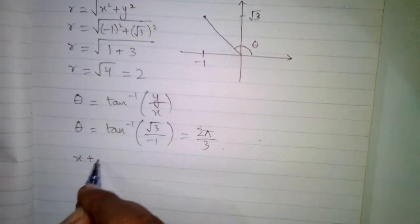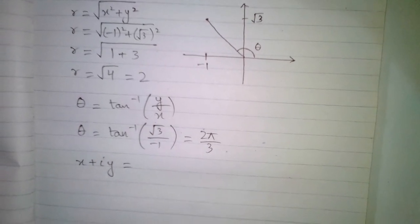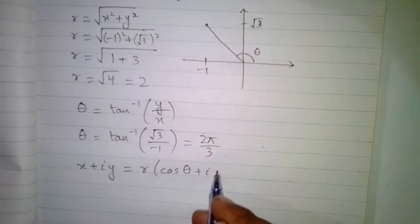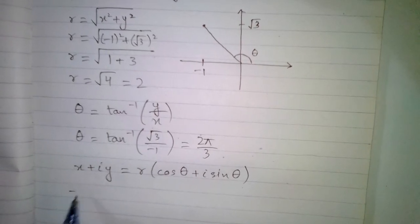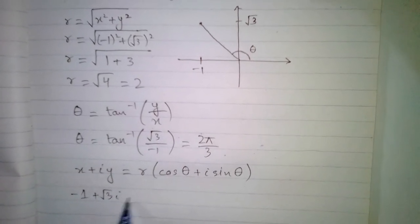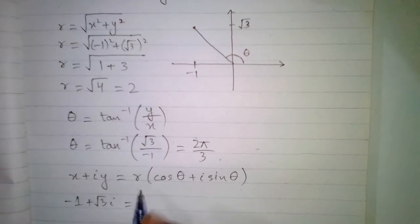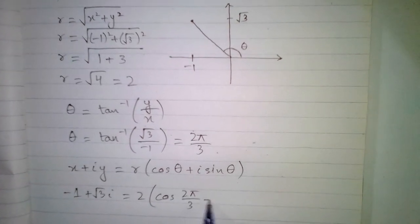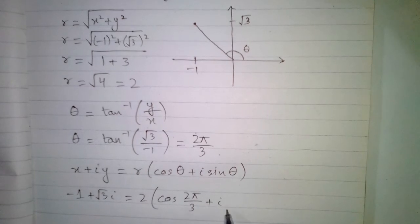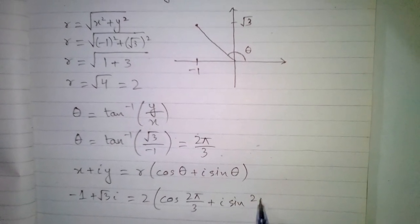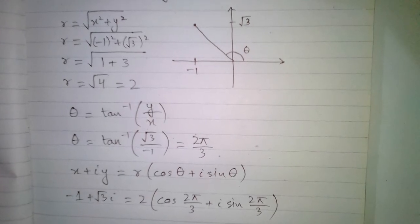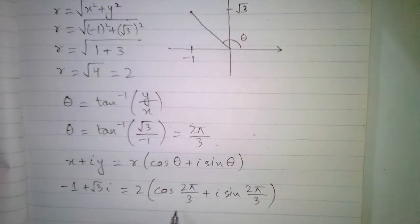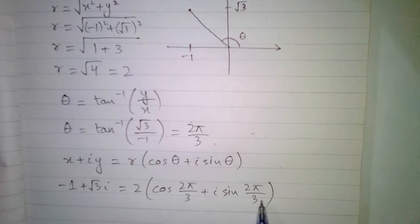Any complex number x plus iota y can be expressed in polar form as r times cos theta plus iota sin theta. So for minus 1 plus root 3 iota, the modulus r is equal to 2 and the angle theta is equal to 2 pi by 3. Therefore the polar form is 2 times cos of 2 pi by 3 plus iota sin 2 pi by 3.